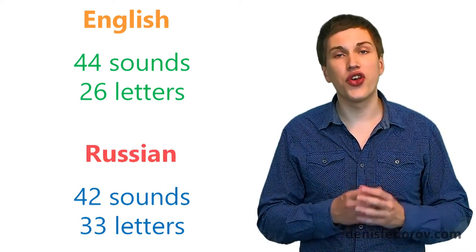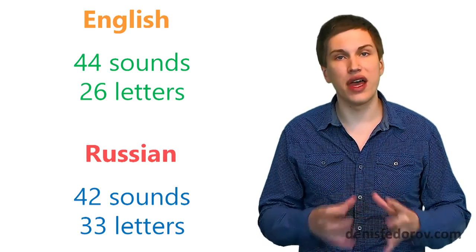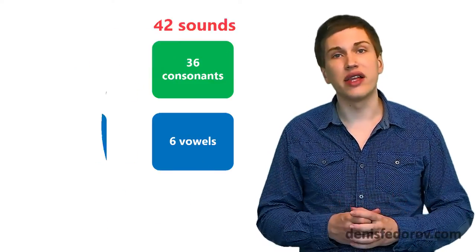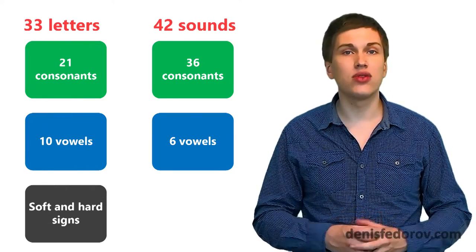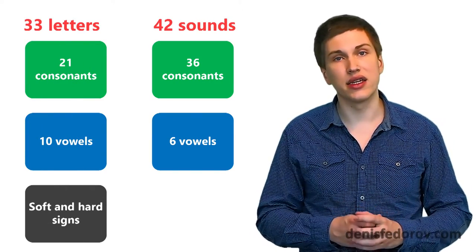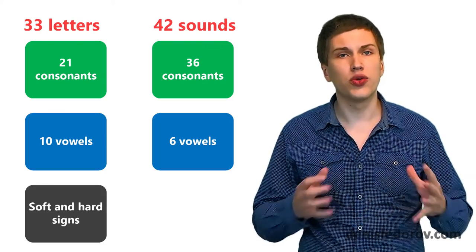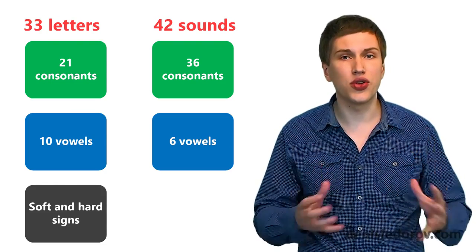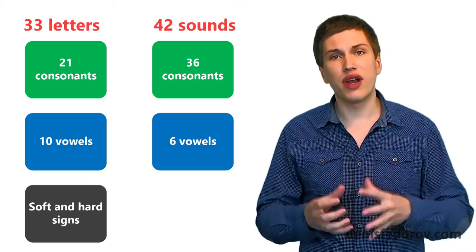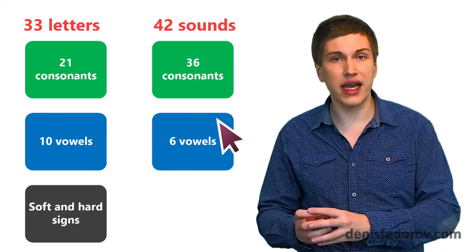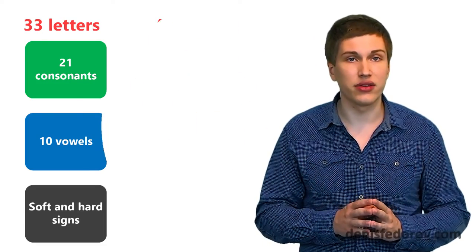In Russian there are 33 letters that represent 42 sounds. 10 vowel letters represent 6 vowel sounds and 21 consonant letters represent 36 consonant sounds. So you see that the situation is the following. In Russian a small amount of vowel sounds goes alongside with a large amount of consonant sounds.